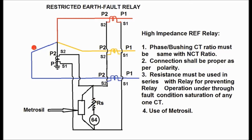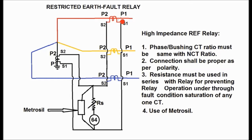First I will discuss about the advantages of the high impedance type and when we cannot actually use the high impedance type restricted earth fault relay. In this diagram, for the star side of the winding, the restricted earth fault high impedance type relay connection has been shown. The formation is simple — all the phase CTs or bushing CTs, whichever is taken, form the restricted earth fault relay.